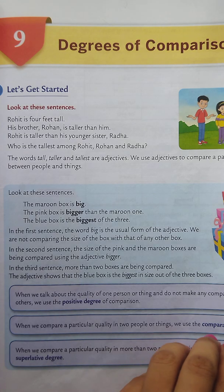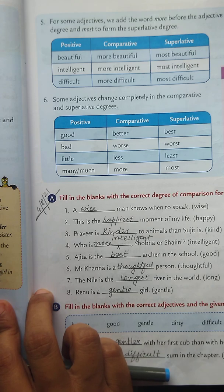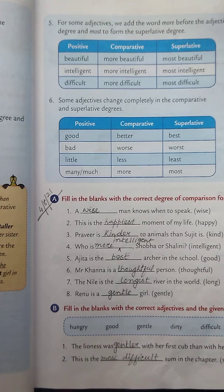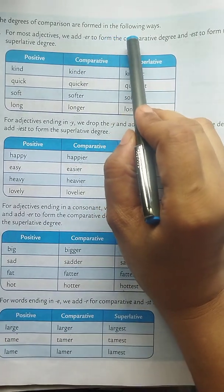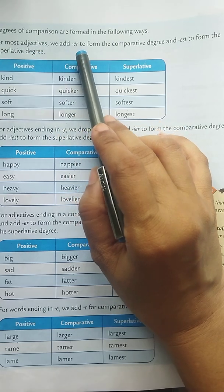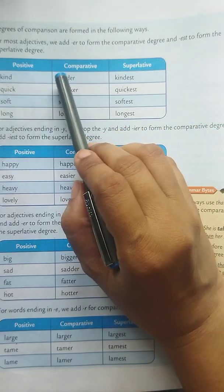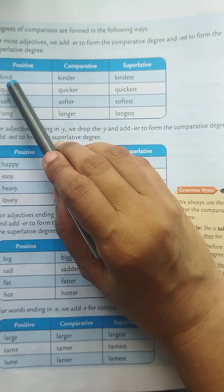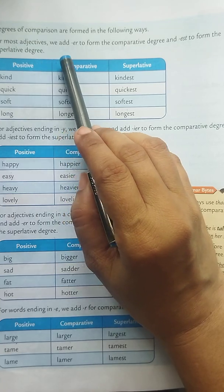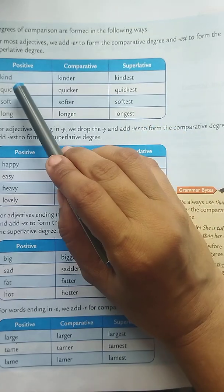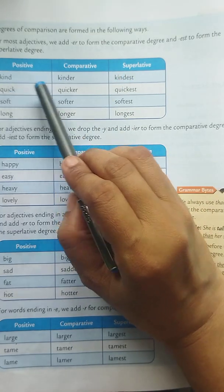Now we will learn the formation of the comparative and superlative degrees of adjective. The degrees of comparison are formed in the following ways. For most adjectives, we add ER to form the comparative degree and EST to form the superlative degree. For example: kind — kinder — kindest. Quick — quicker — quickest. Soft — softer — softest. Long — longer — longest.